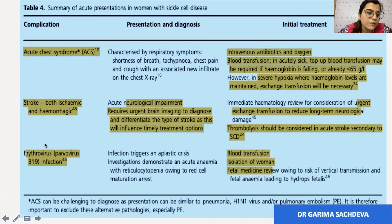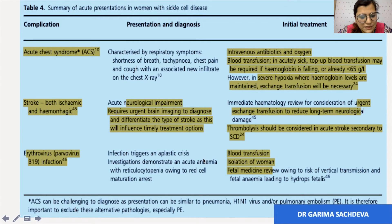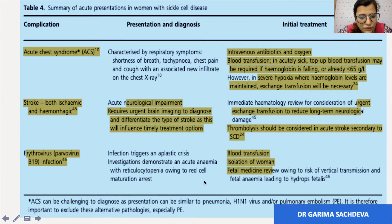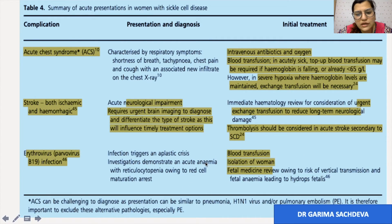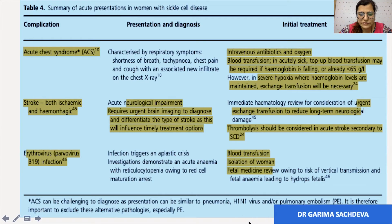Regarding erythrovirus infection: it is triggered by aplastic crisis. On investigation, there is acute anaemia with reticulocytopenia due to red cell maturation arrest. These patients are treated with blood transfusion, isolation of the woman because parvovirus is infectious, and fetal medicine referral.